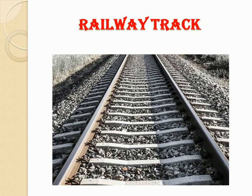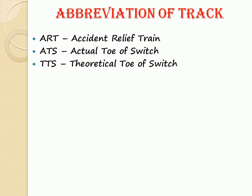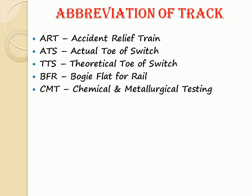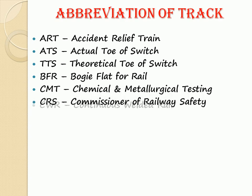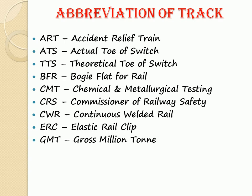Railway Track — Abbreviations. ART: Accident Relief Train. TTS: Theoretical Toe-Off Switch. BFR: Bogie Flat Rail. CMT: Chemical and Metallurgical Testing. CRS: Commissioner of Railway Safety. CWR: Continuous Welded Rail. ERC: Elastic Rail Clip. GMT: Gross Million Ton. GRSP: Grooved Rubber Sole Plate. IRCA: Indian Railway Conference Association.